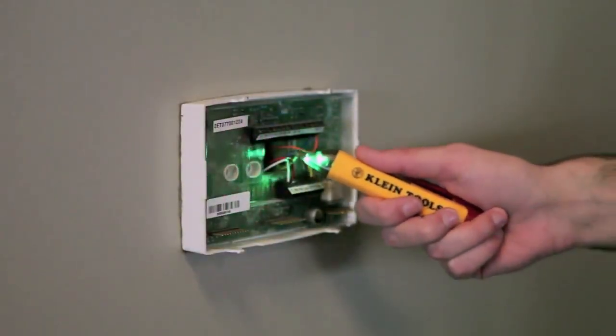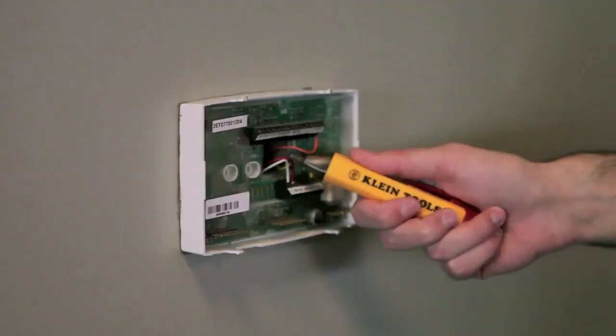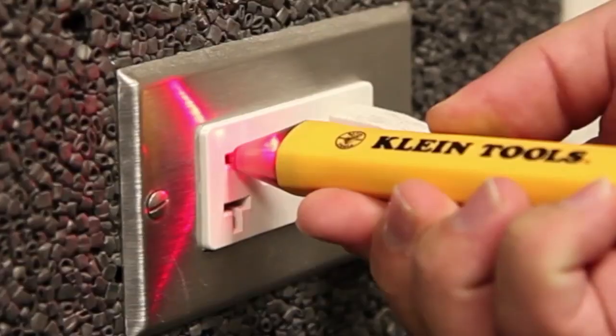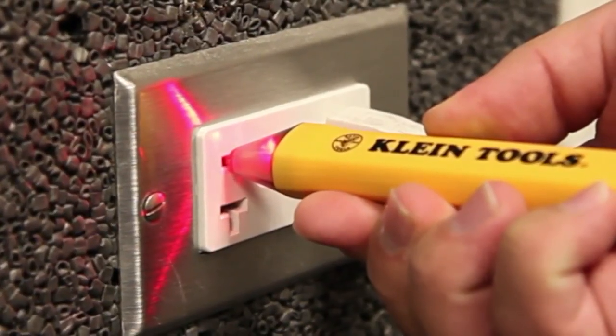The NCBT2 indicates low voltage with a low pitched beeping tone and blinking red LED light. A steady red LED light and low pitched beeping tone indicates the tester is detecting standard voltage.